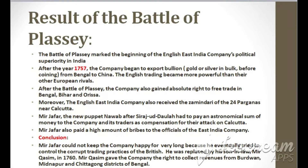The Battle of Plassey marked the beginning of the English East India Company's political superiority in India. After 1757, the company began to export bullion from Bengal to China, and English trading became more powerful than their other European rivals. After the Battle of Plassey, the company also gained the absolute right to free trade in Bengal, Bihar and Orissa. Moreover, the English East India Company also received the zamindari of the 24 Parganas near Calcutta.